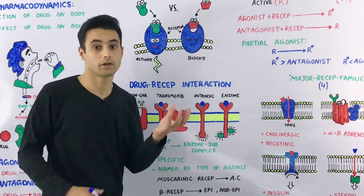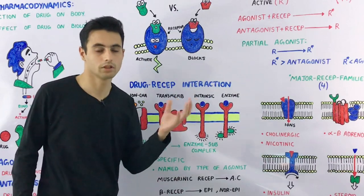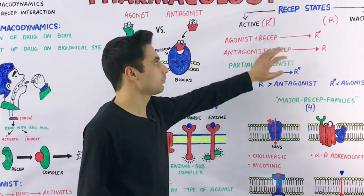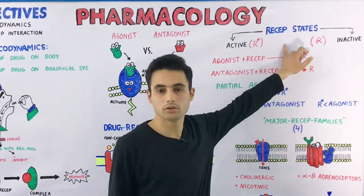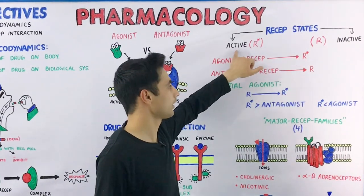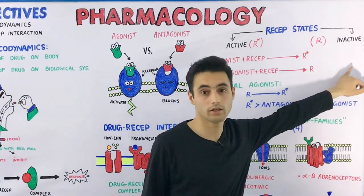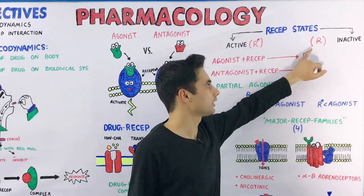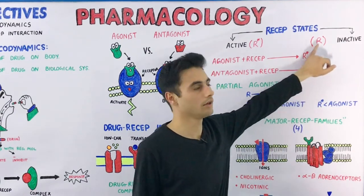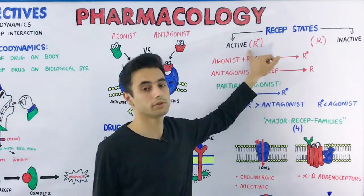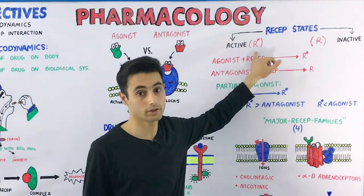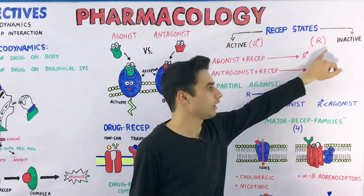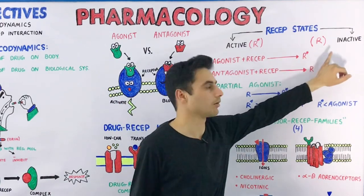The receptor exists in two states: either the active state or the inactive state. The inactive state is represented with a capital letter R, and the active state is represented with a capital letter R with a star sign on it. Majorly, the inactive state is favored.